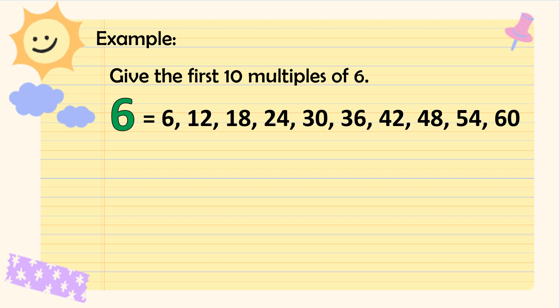Here are some examples. Give the first 10 multiples of 6. So, andito tayo sa 6. Pwede tayo mag-skip counting or just write the product of the multiplication table 6. So, we have 6, 12, 18, 24, 30, 36, 42, 48, 54, at 60. First 10 lang, kaya hanggang 10 multiples lang ang kinuha natin.